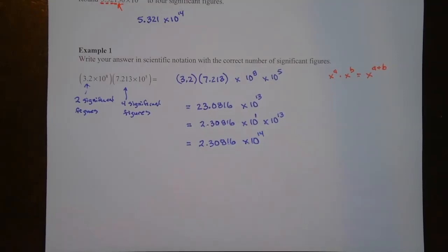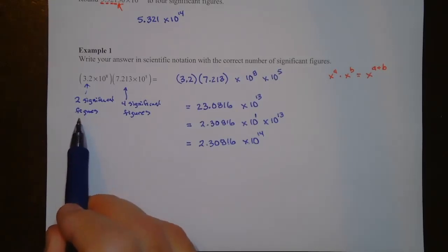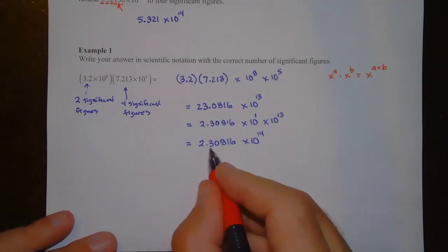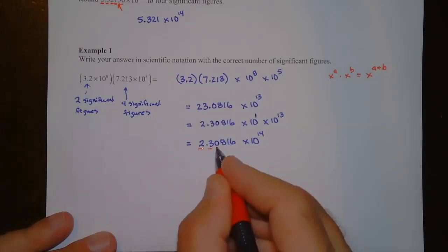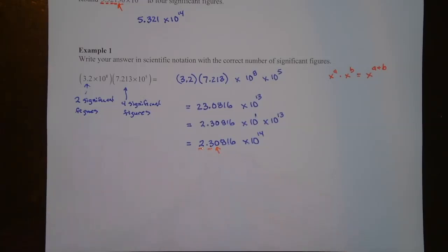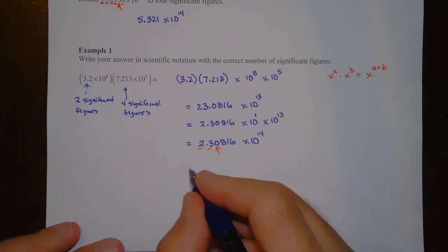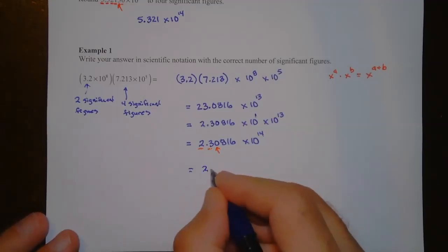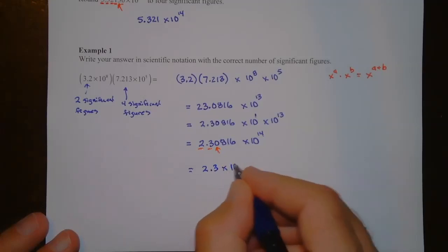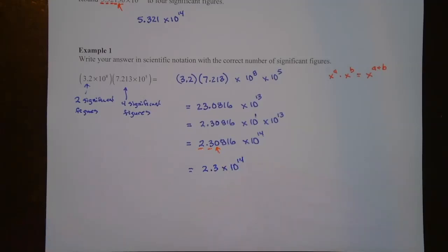Now we apply the significant figures rule. Our answer needs two significant figures, and 2.30816 has six. Here's the first, here's the second — I look at the third digit to determine rounding. Since that's a zero, we don't round up. The final answer written with the correct number of significant figures is 2.3 times 10 to the 14th. If there were units, we'd include them here too.